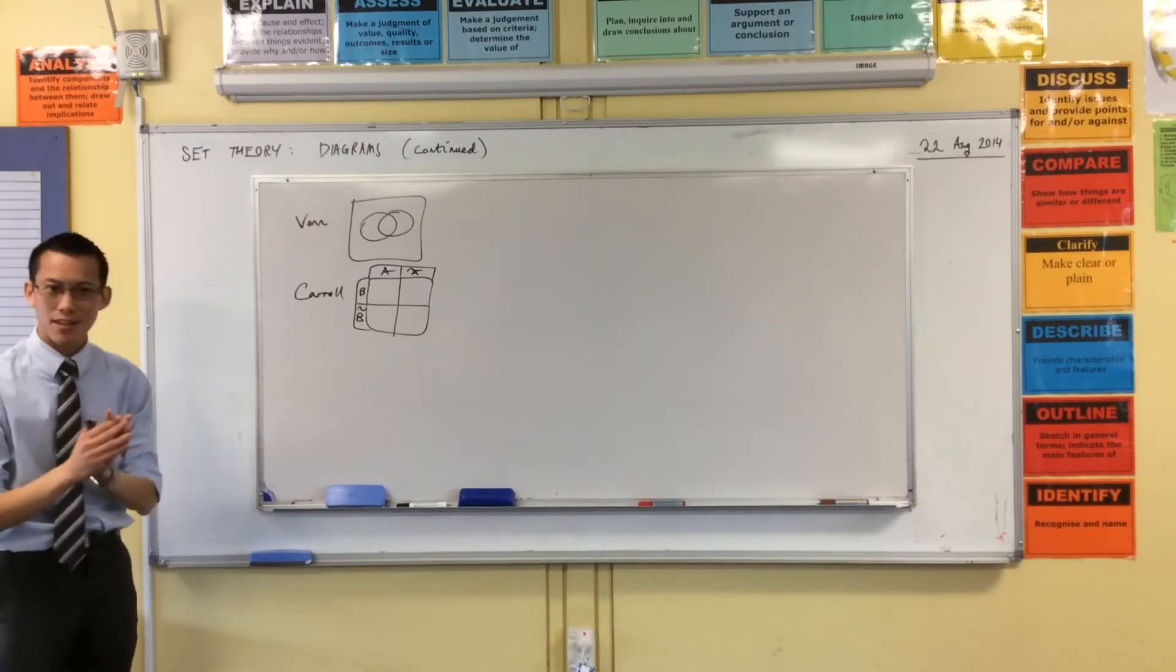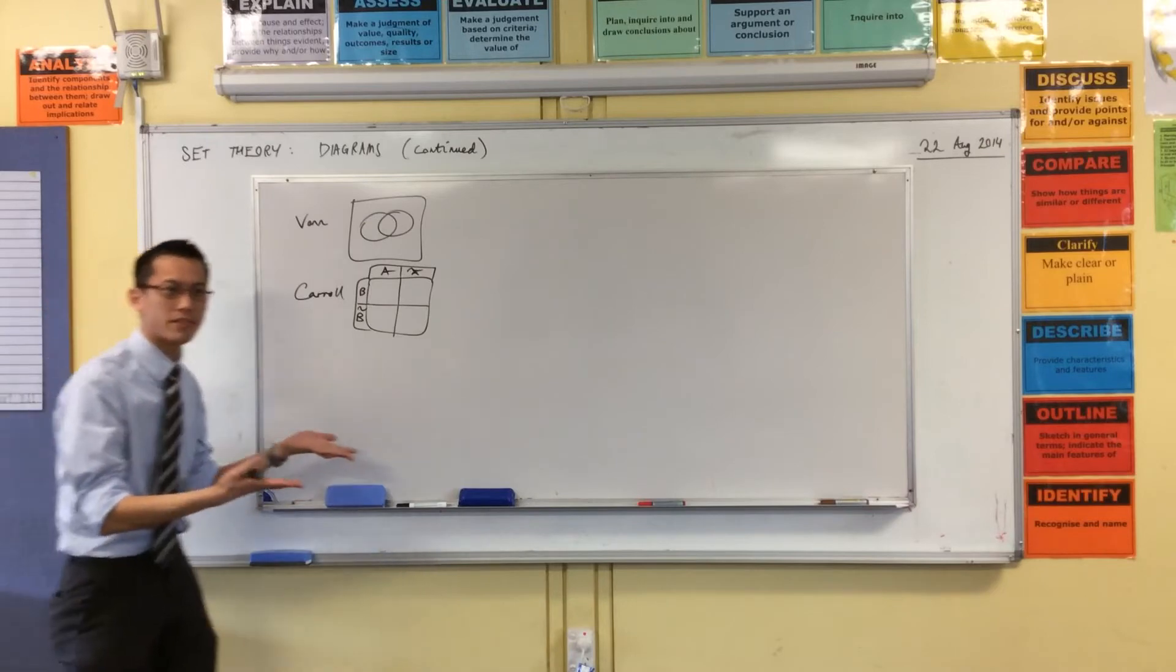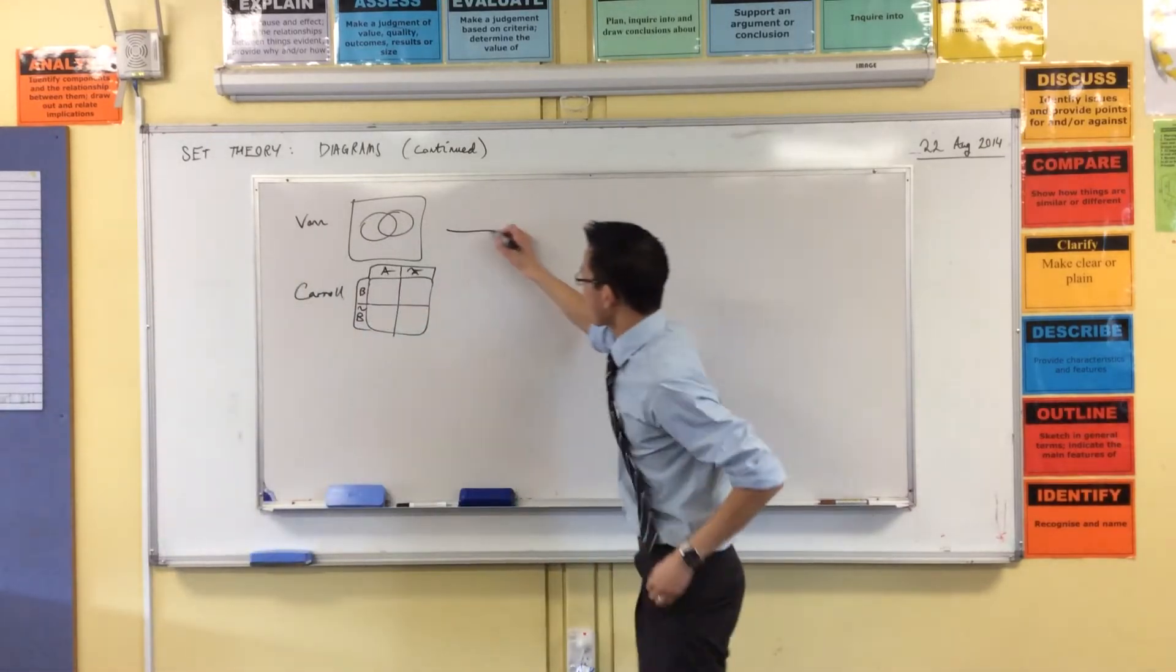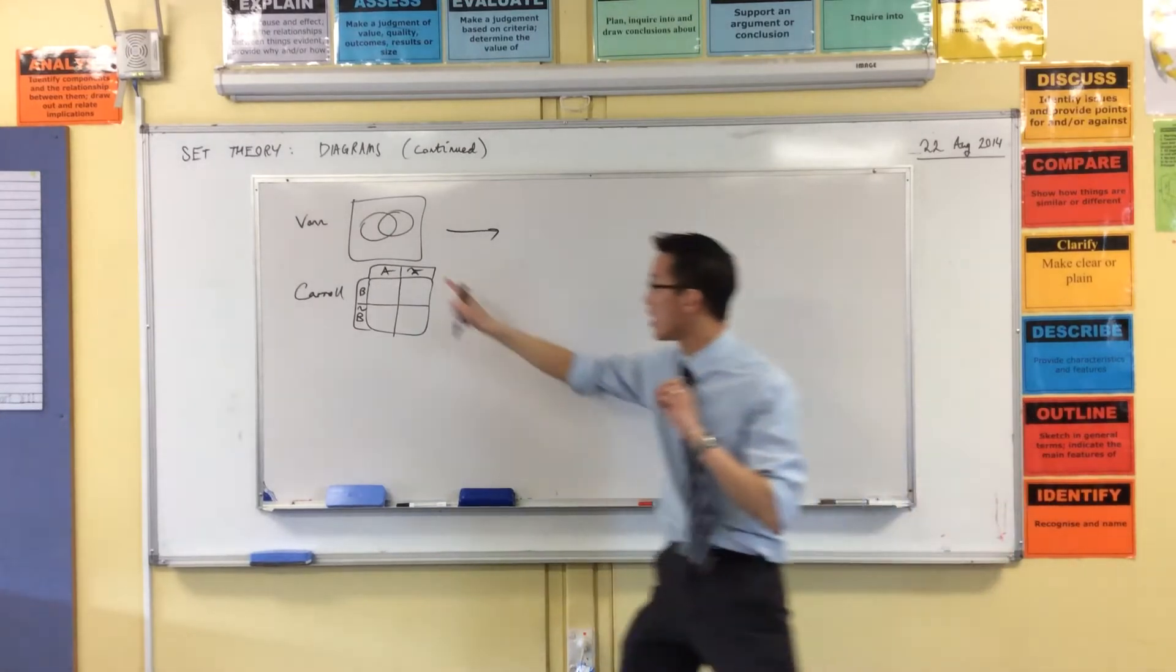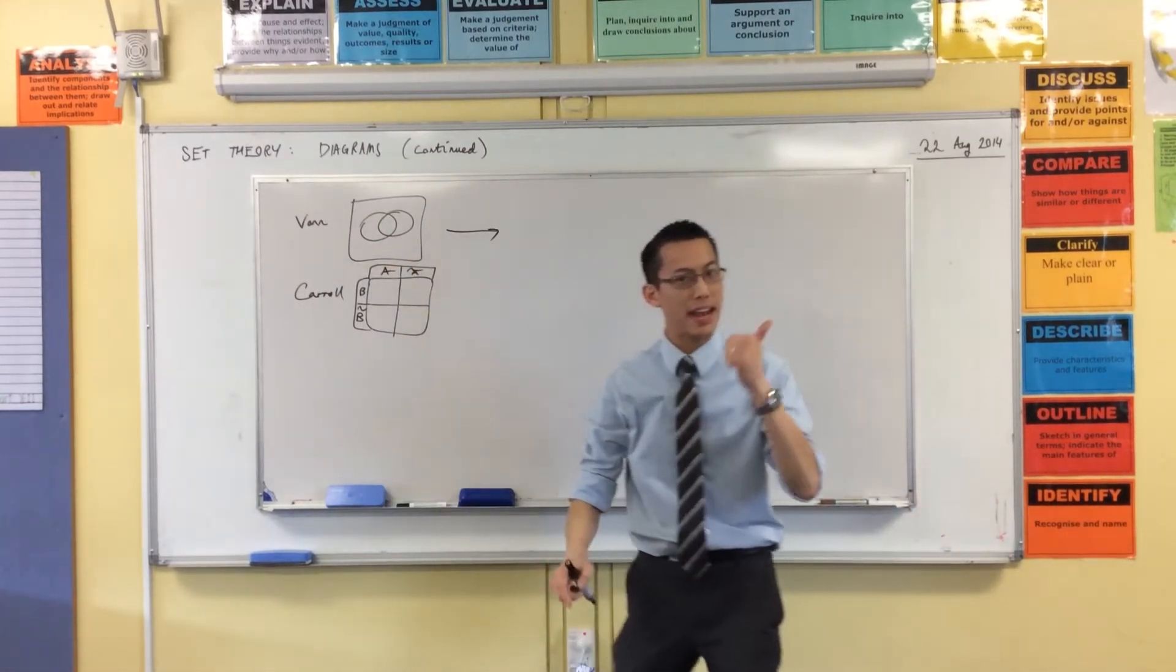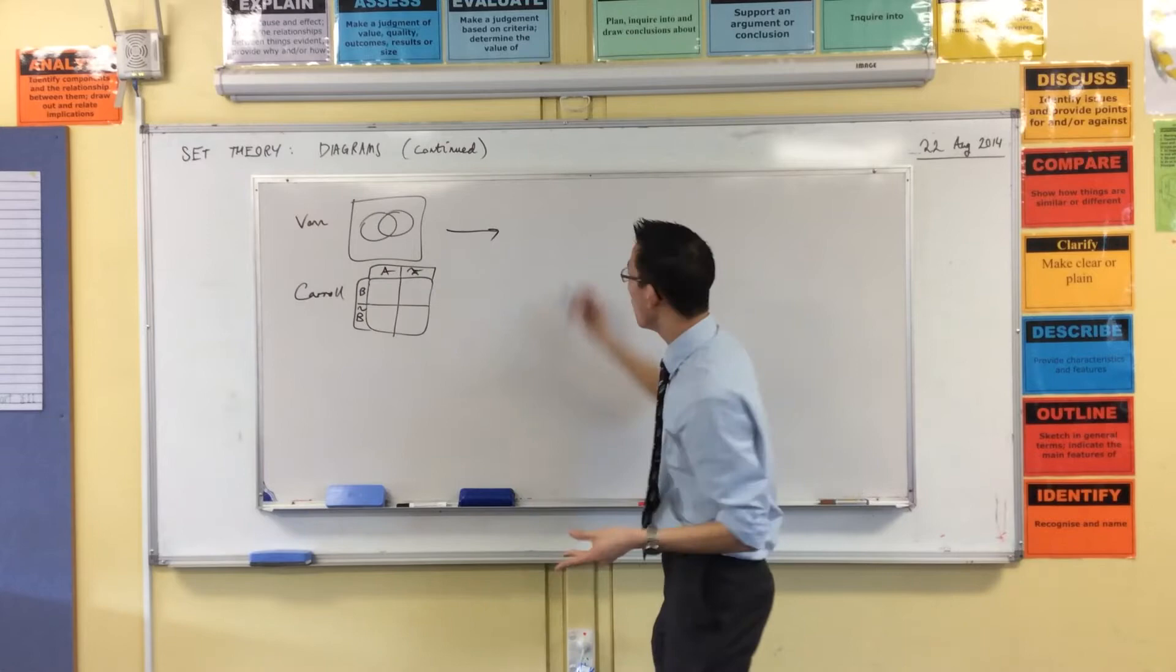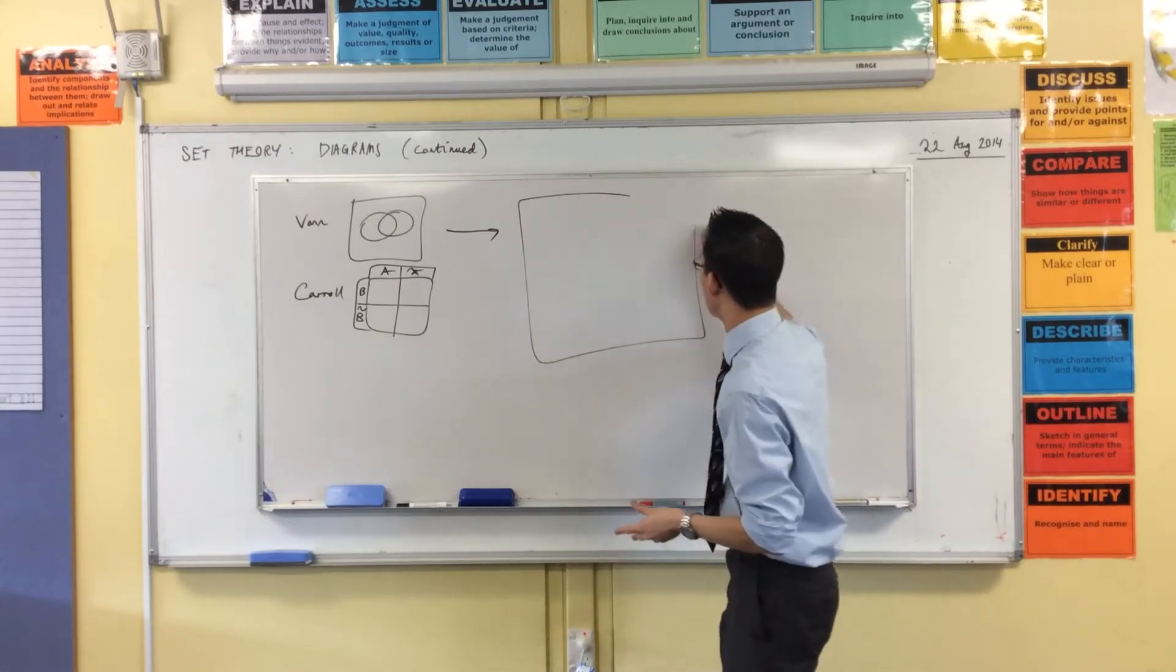So we looked at different kinds of diagrams. Today, we're going to look at different kinds of diagrams for different numbers of sets. Because look at these. Both of these, despite their differences, same number of sets. How many? Two. Just two. So let's, where we're going to start is, well, let's ramp it up.